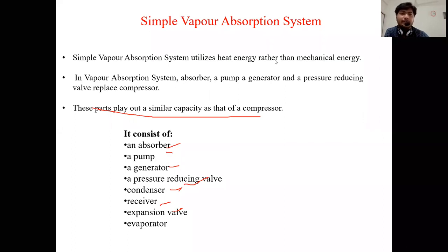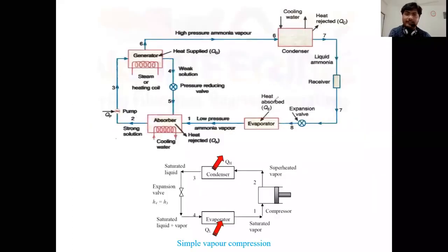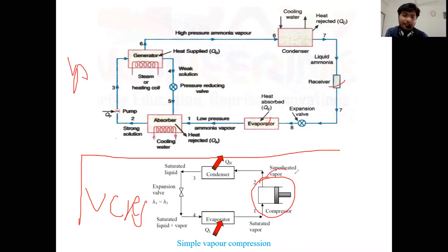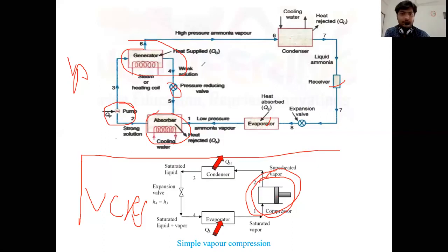Here I am showing a simple vapor absorption refrigeration system cycle. In the VCRS cycle we have condenser, receiver, and evaporator, with the compressor inserted. In VARS, we can make a clear comparison: instead of the compressor, we use the generator, pump, absorber, and pressure-regulating valve. If these four components are removed and replaced with a compressor, it becomes a VCRS.